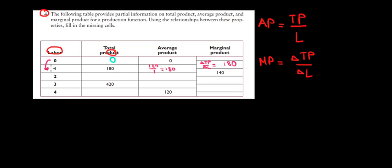So we go with our labor from one to two. We can see that we must find out total product and average product, knowing that the marginal product is 140, meaning that the total production increased by 140 relative to the total production before. So it used to be 180, it increased by 140. So in total, it has to be 320.